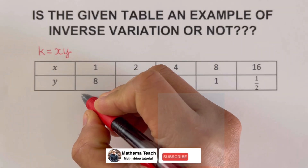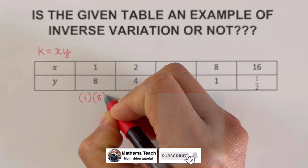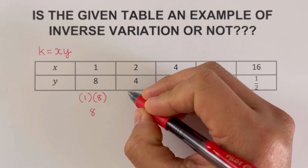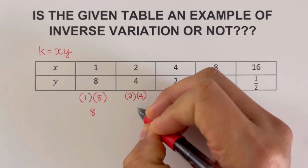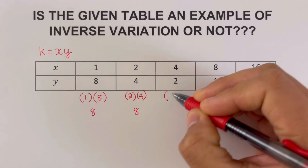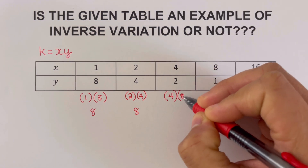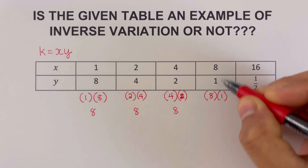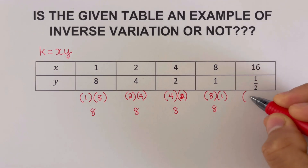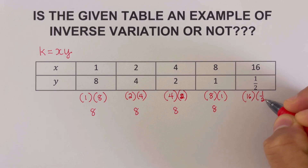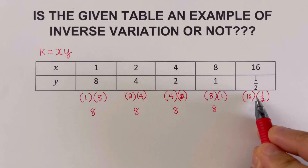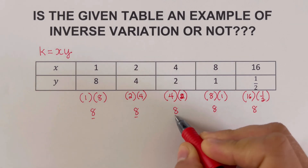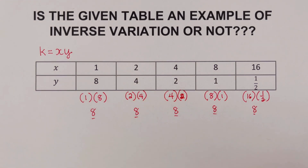Multiplying each x and y pair: 1 times 8 gives us 8; 2 times 4 gives us 8; 4 times 2 gives us 8; 8 times 1 gives us 8; and 16 times one-half — that is 16 times 1 divided by 2 — gives us 8.